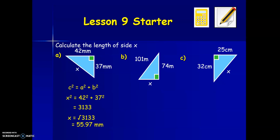For example B, we have 101 meters opposite the right angle, so that's the hypotenuse. So X is a shorter side. This time we need to use the subtract version of Pythagoras. Putting in our values, we get X squared equals 101 squared take away 74 squared, which gives us 4,725. Square rooting that, we get X equal to 68.74 meters.